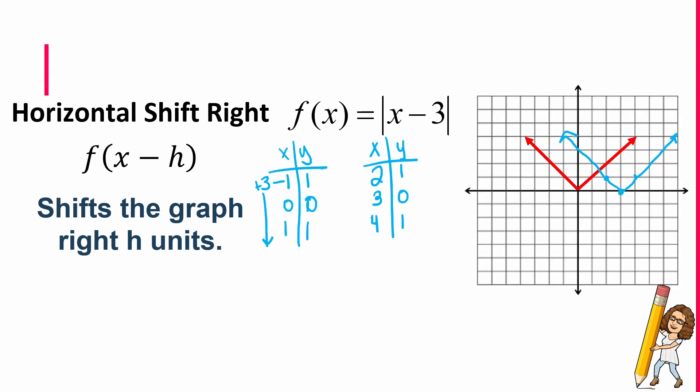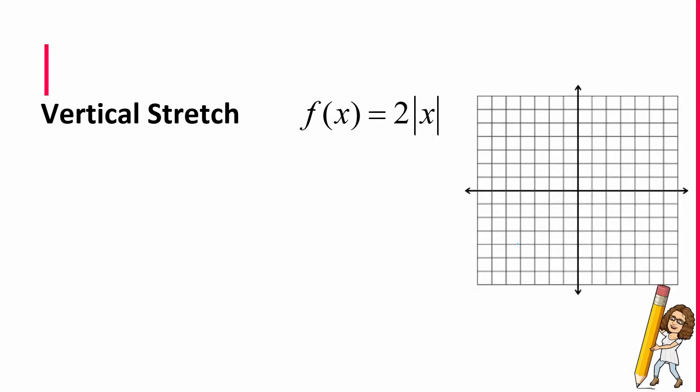Notice we've moved up, down, left, and right, but we haven't changed the arms at all — we haven't changed the slope of the arms. Let's take a look at how to accomplish that. The first thing we have is what's known as a vertical stretch. What that means is the arms have literally been picked up and stretched, kind of like a rubber band, and you're going to see a number in front of the function that is bigger than one.